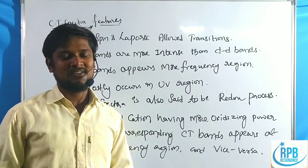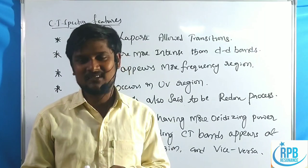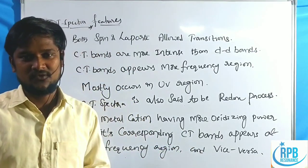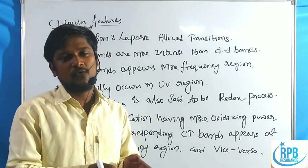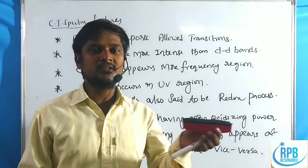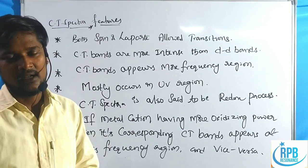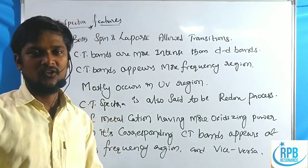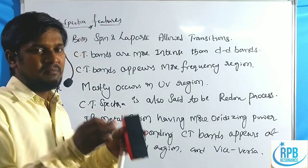Welcome to the RPB Resonance Commission. We are discussing a very interesting topic in coordination complexes - the colors behind coordination complexes. The reasons behind color are dd transitions and charge transfer transitions. Now we are discussing charge transfer spectra in coordination complexes. Charge transfer has several types: metal to ligand, ligand to metal, intervalence metal to metal, and ligand to ligand charge transfers.